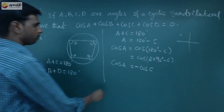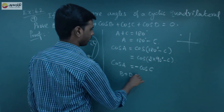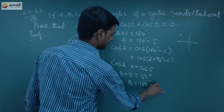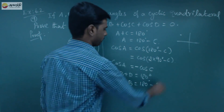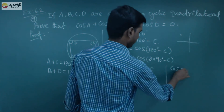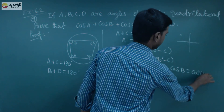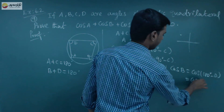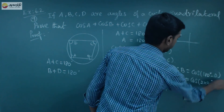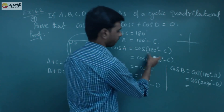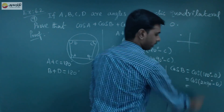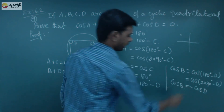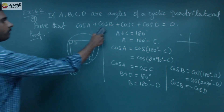Similarly, b plus d equals 180 degrees, so b equals 180 minus d. Applying cosine to both sides: cos b equals cos(180 minus d). Using the same formula, cos(180 minus d) equals negative cos d. So cos b equals negative cos d.